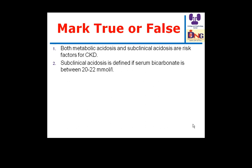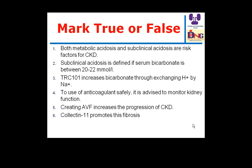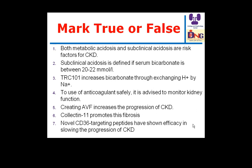Is the definition of subclinical acidosis as serum bicarbonate between 20 to 22 right or wrong? Moving on: TRC-101 increases bicarbonate through exchanging hydrogen ion by sodium — this is a new drug. The use of anticoagulants safely requires monitoring kidney function. Creating a fistula increases the progression of chronic kidney disease — maybe true, maybe false. Collectin-11 promotes fibrosis. Novel CD36 targeting peptides have shown efficacy in slowing the progression of CKD.